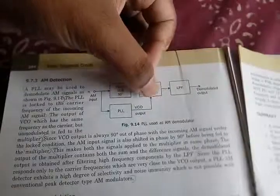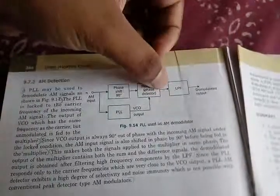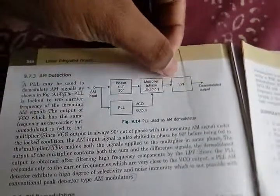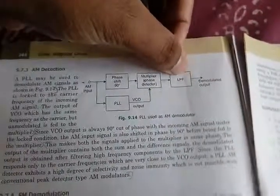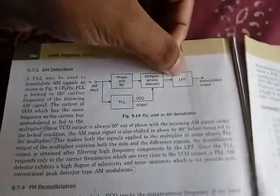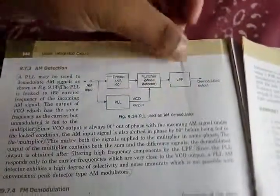This is the sum and the difference. This is the low pass filter. This low pass filter outputs the difference signal, not the sum.